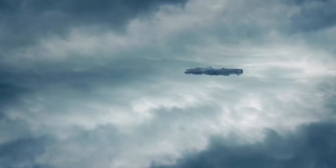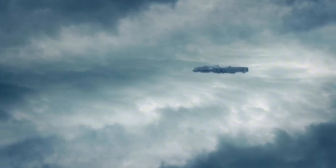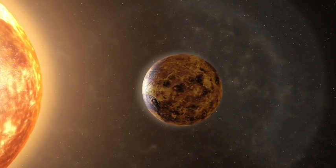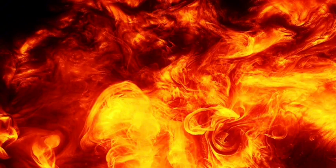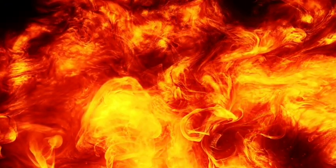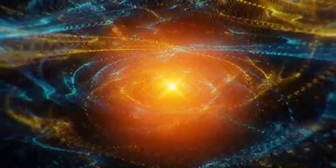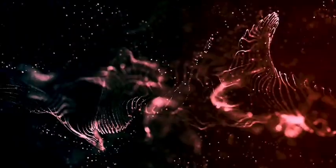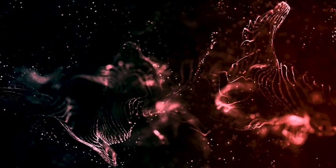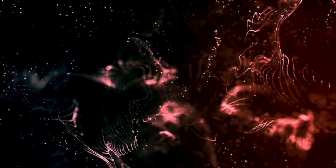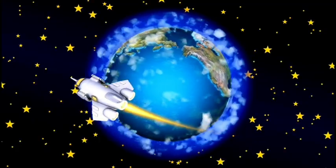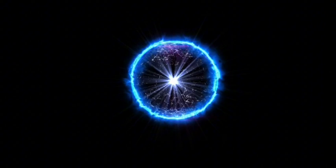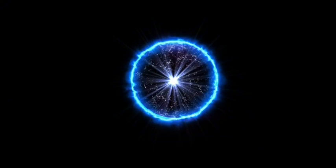Proxima b isn't alone in its system. It has a companion, Proxima Centauri c, which could reveal even more secrets. Proxima Centauri emits a similar amount of energy as Earth receives from the sun, which raises fascinating possibilities. Could there be water on Proxima b's surface?